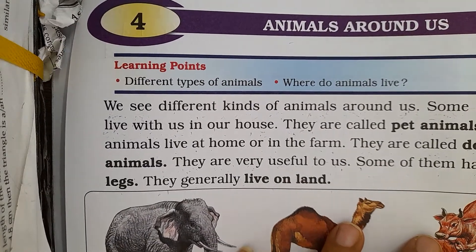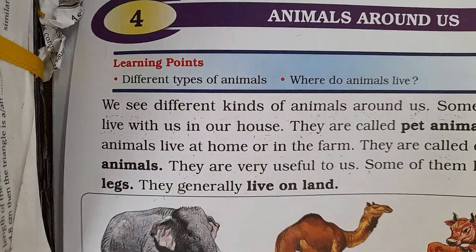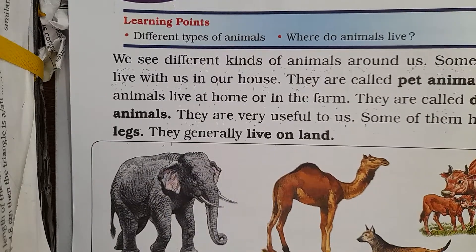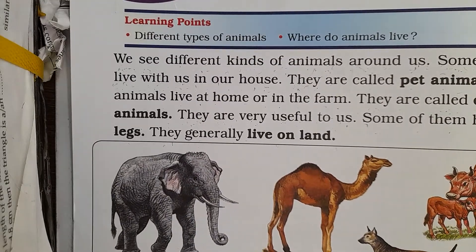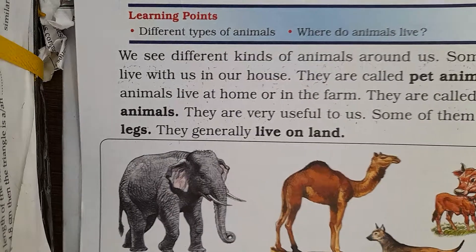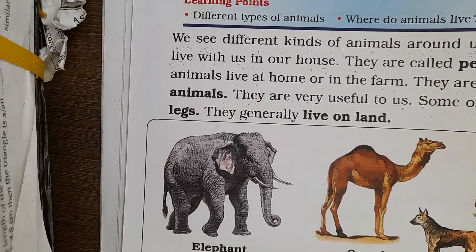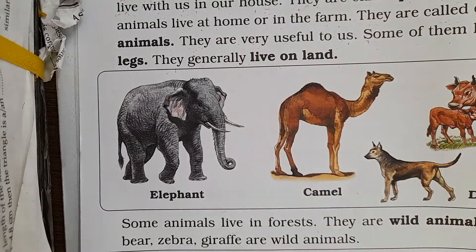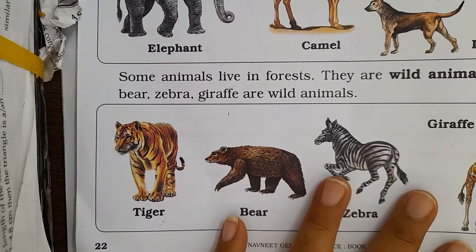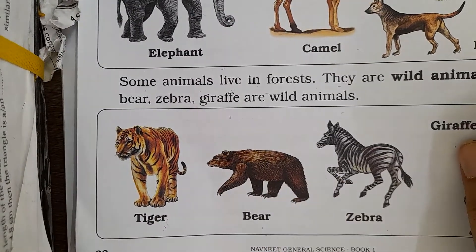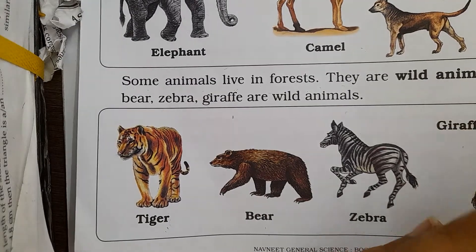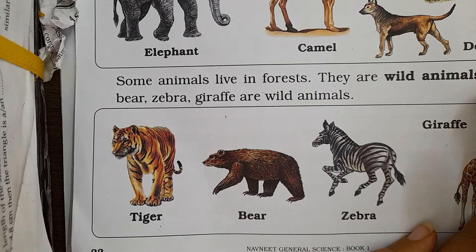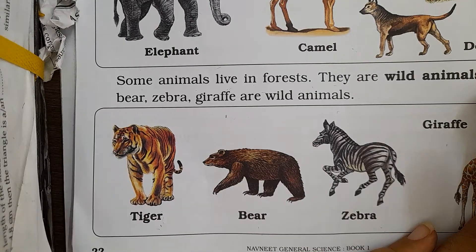Domestic animals are very useful — we carry luggage with some of them. Some of these animals have four legs and generally live on land. For example, elephant, camel, dog, cow. Wild animals — we call them wild animals — like zebra, bear, and giraffe.